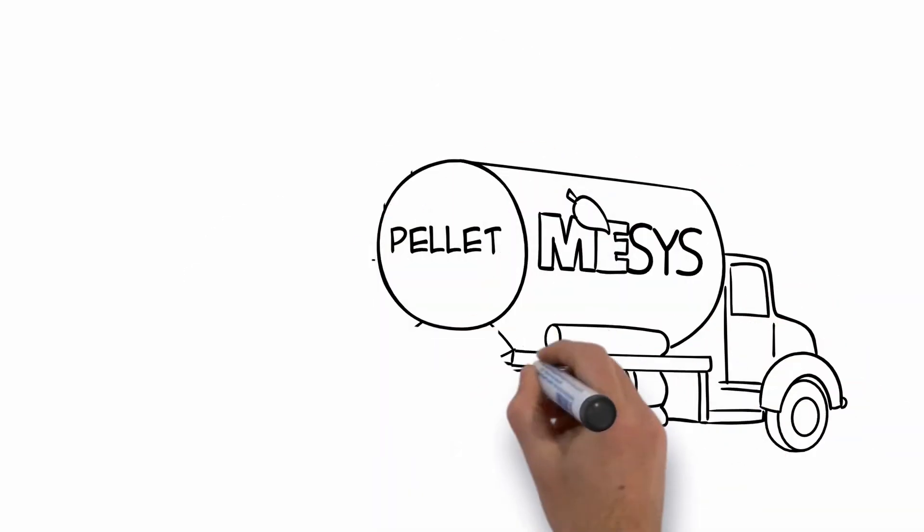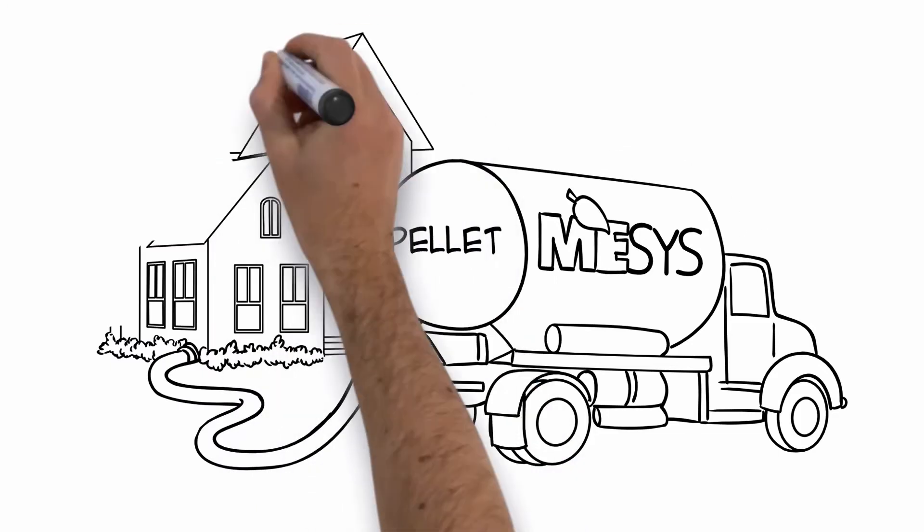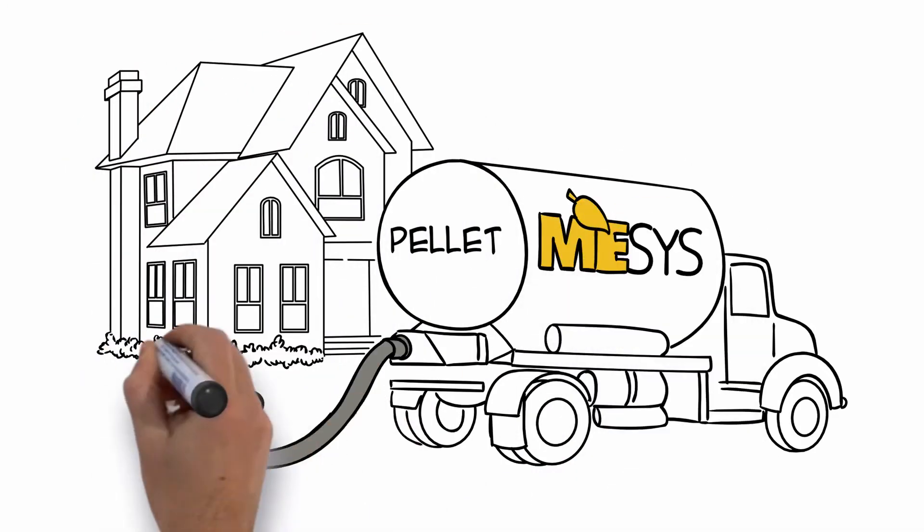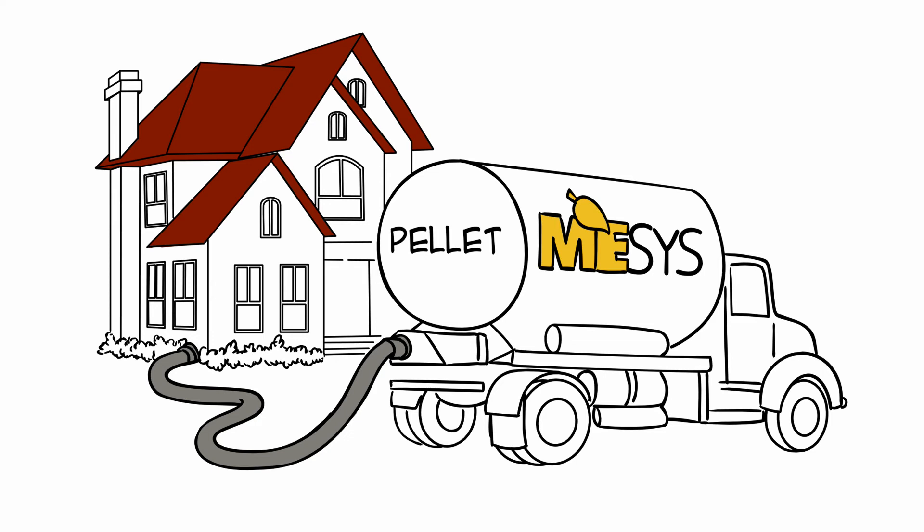Pellets are delivered to your home by a truck, just like oil or propane, and are automatically fed to the boiler through a fully integrated auger or vacuum system.